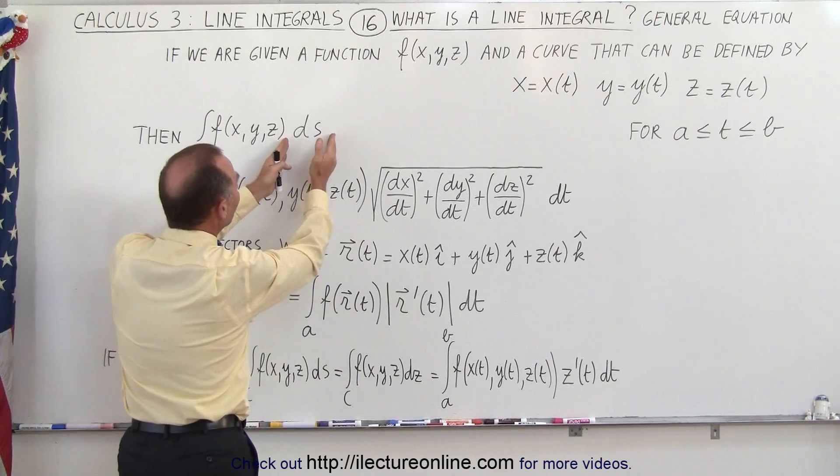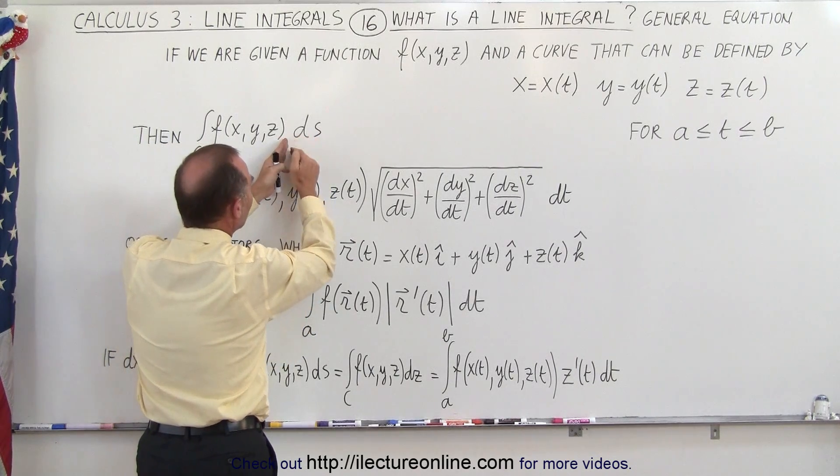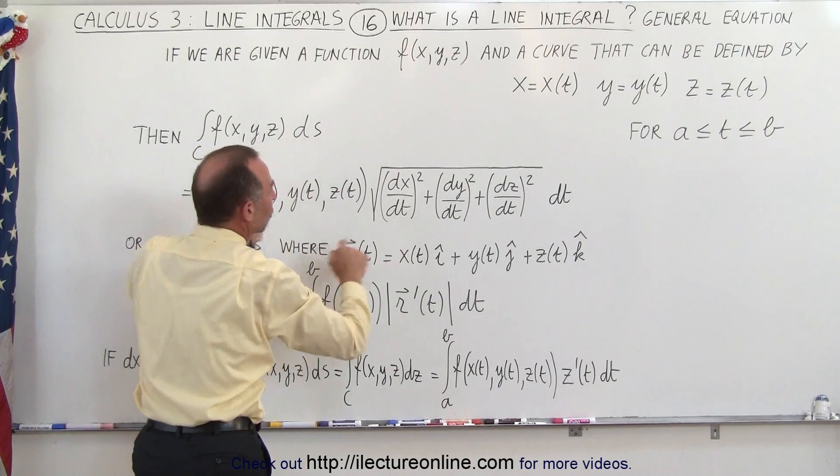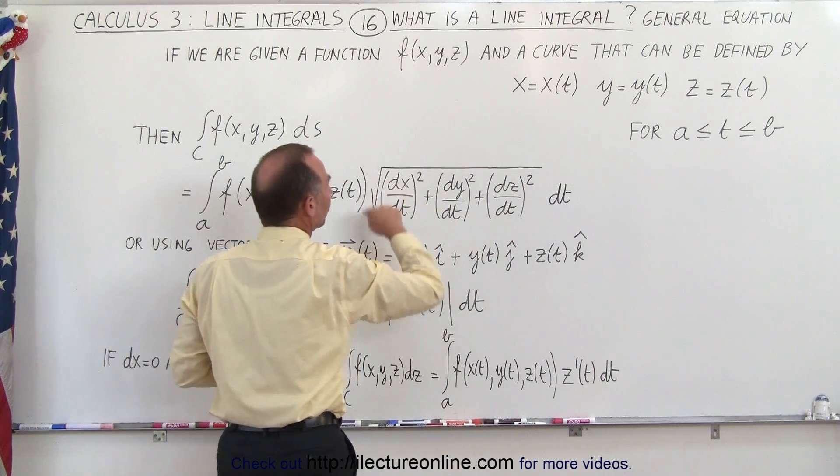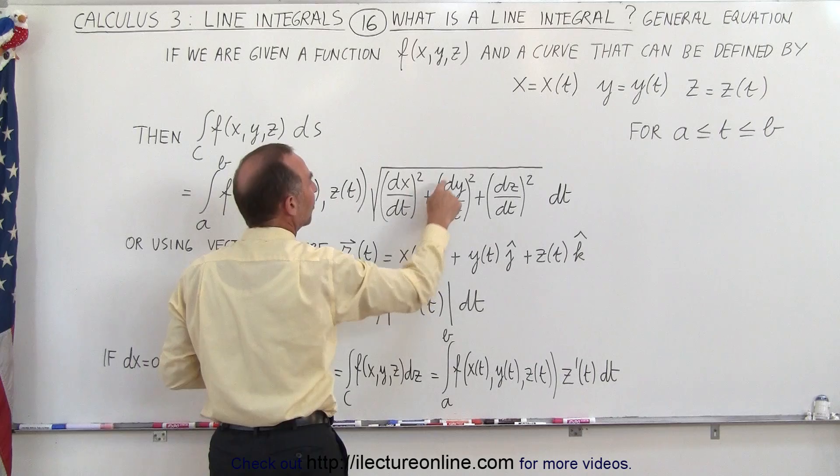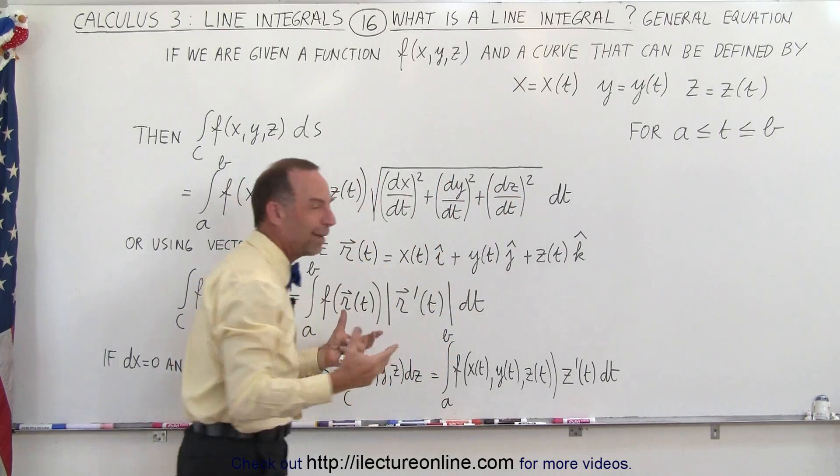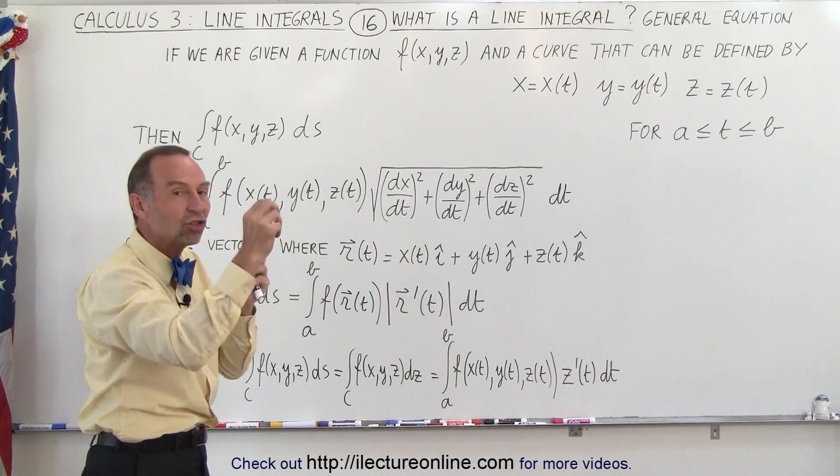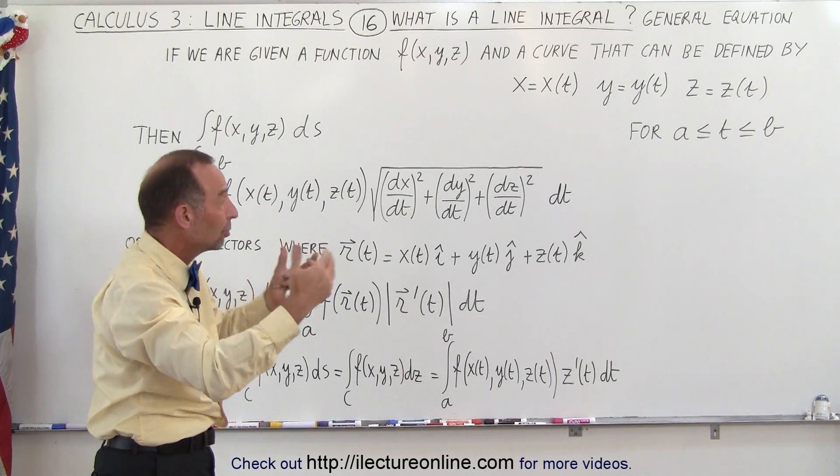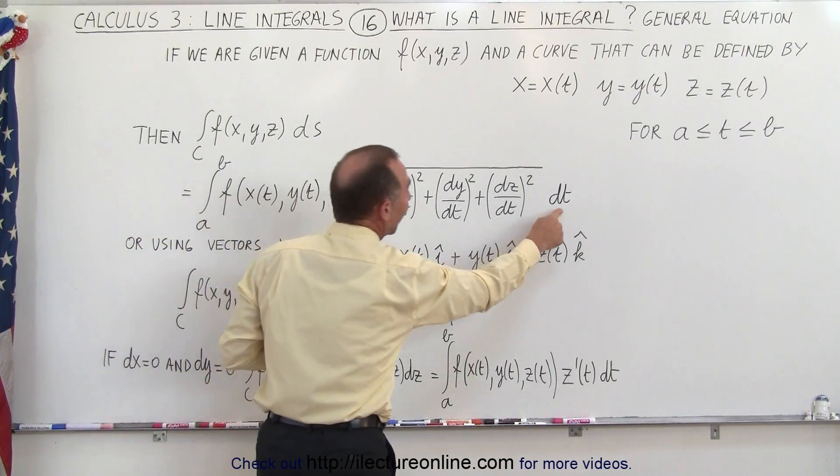And then the ds, the small change from one point of the curve to another point of the curve, can now be expressed in terms of dx/dt squared plus dy/dt squared plus dz/dt squared, basically a Pythagorean theorem of a small change in space in three dimensions times dt.